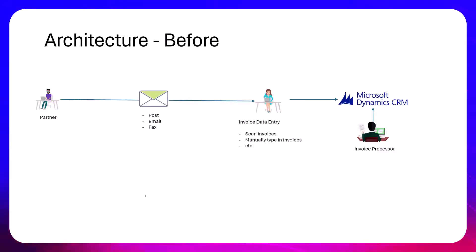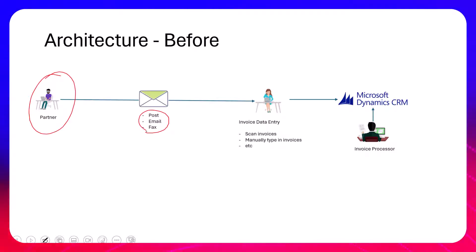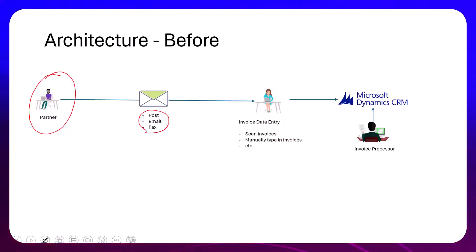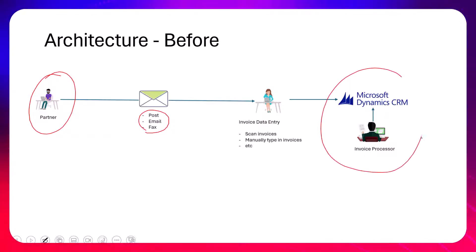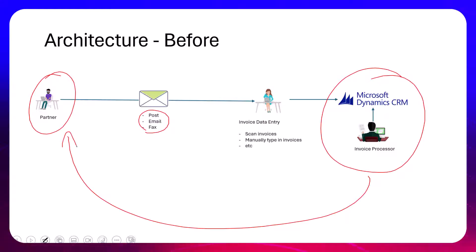The architecture beforehand looked like this: the partner over here submits invoices, previously via post, email, or fax. There's a big time delay until they get to us, somebody has to manually process them, scan them in, and type in the details. They end up in Dynamics CRM where they start getting processed, and eventually payment goes back to the partner who reimburses the customer.